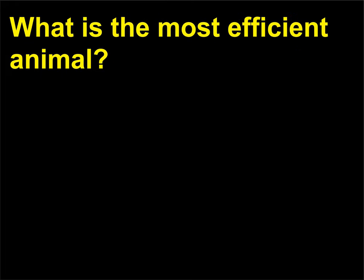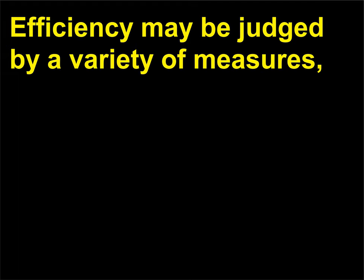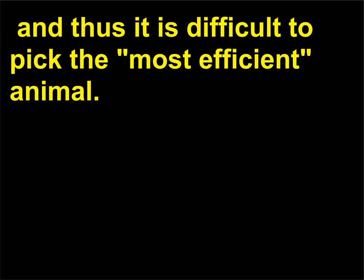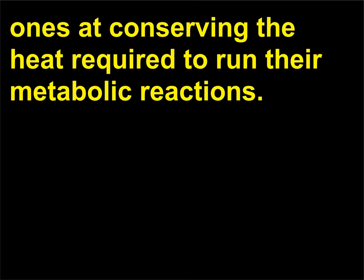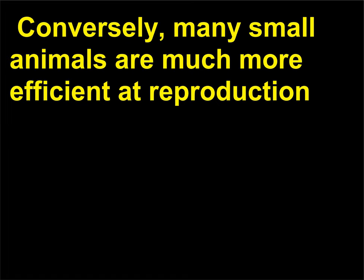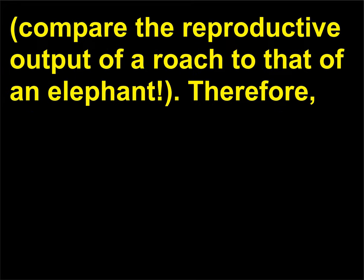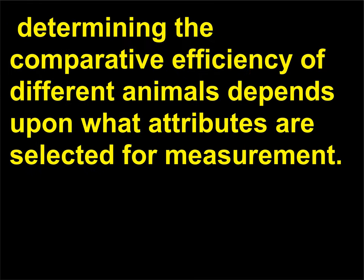What is the most efficient animal? Efficiency may be judged by a variety of measures, and thus it is difficult to pick the most efficient animal. For example, small animals tend to be much less efficient than larger ones at conserving the heat required to run their metabolic reactions. Conversely, many small animals are much more efficient at reproduction — compare the reproductive output of a roach to that of an elephant. Determining the comparative efficiency of different animals depends upon what attributes are selected for measurement.